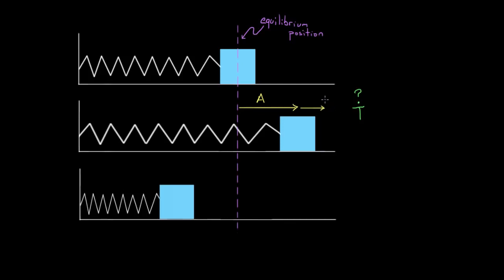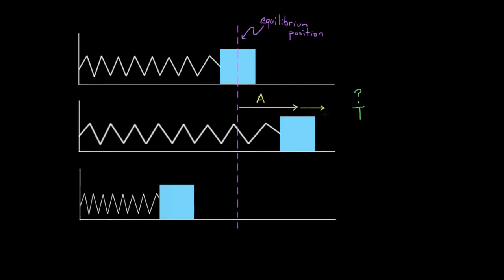Some of you might say yes, it should increase the period, because now the mass has farther to travel. Instead of just traveling through this small amount back and forth, it's got to travel through this larger amount back and forth. Since it has farther to travel, the period should increase.